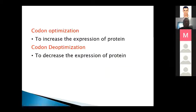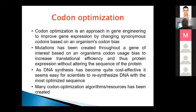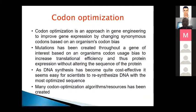There are two strategies: codon optimization and codon de-optimization. In codon optimization, you increase the expression of a protein by changing the codons to match the codon usage pattern of the host organism, thereby increasing the efficiency of protein synthesis.